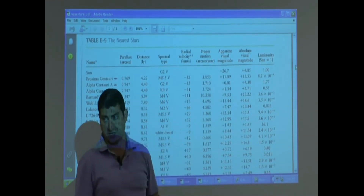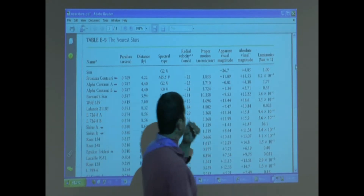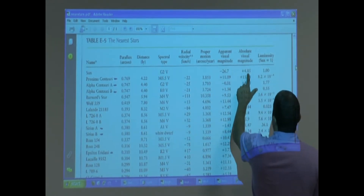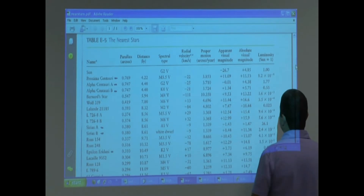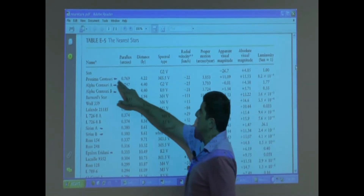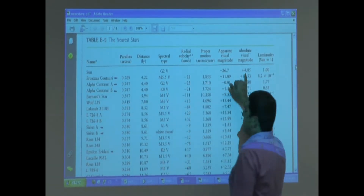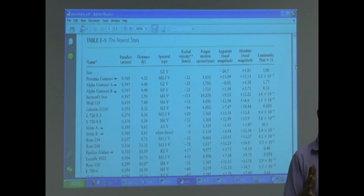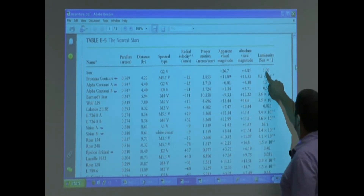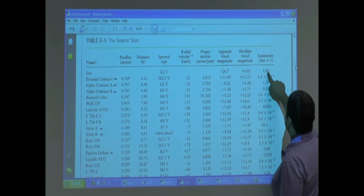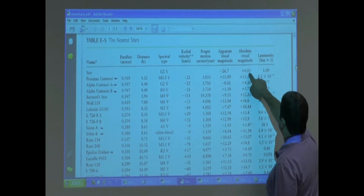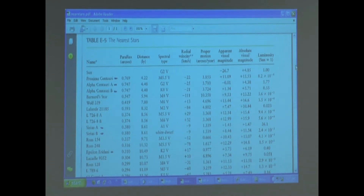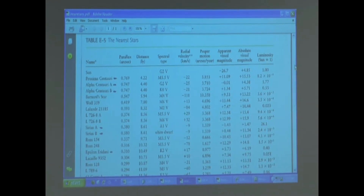Let's first look at how bright the star actually is. What does the Sun get? The Sun no longer gets a special place on this scale — remember on the luminosity scale the Sun had a one and everything was compared to it — but on the Hipparchus scale the Sun just gets a 4.85.